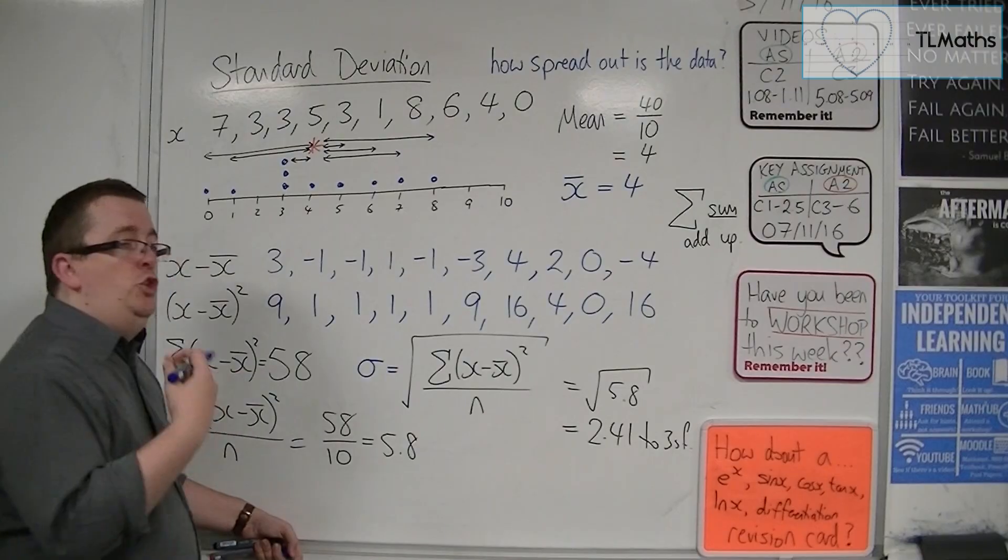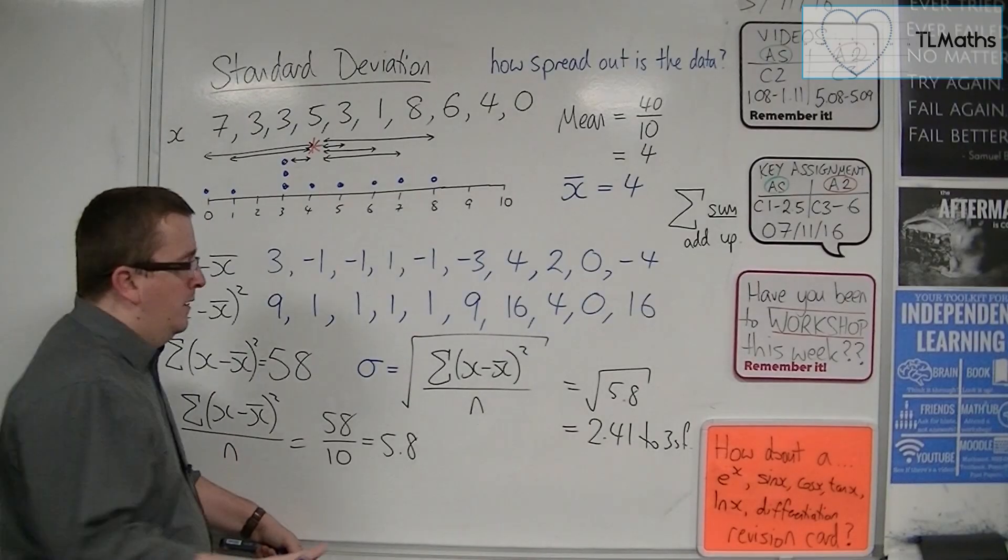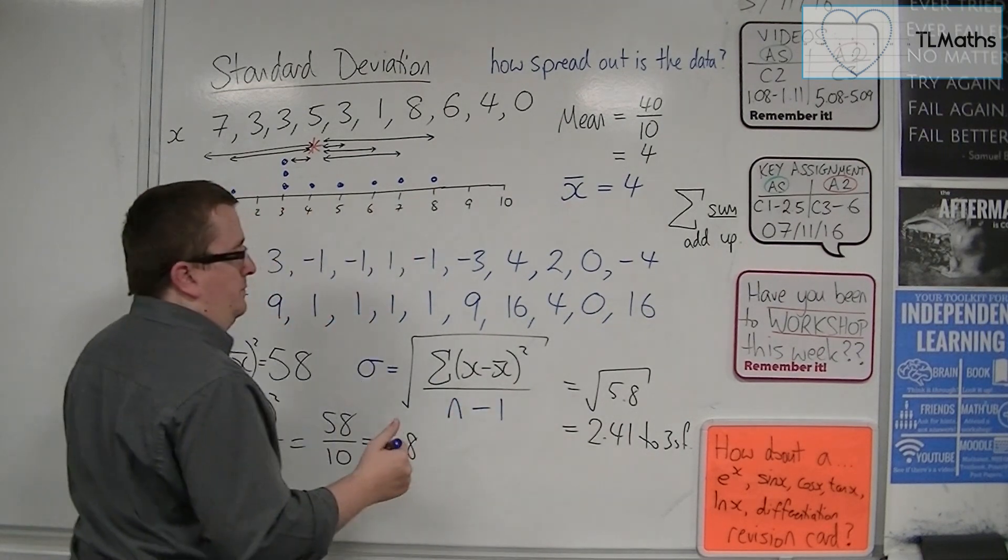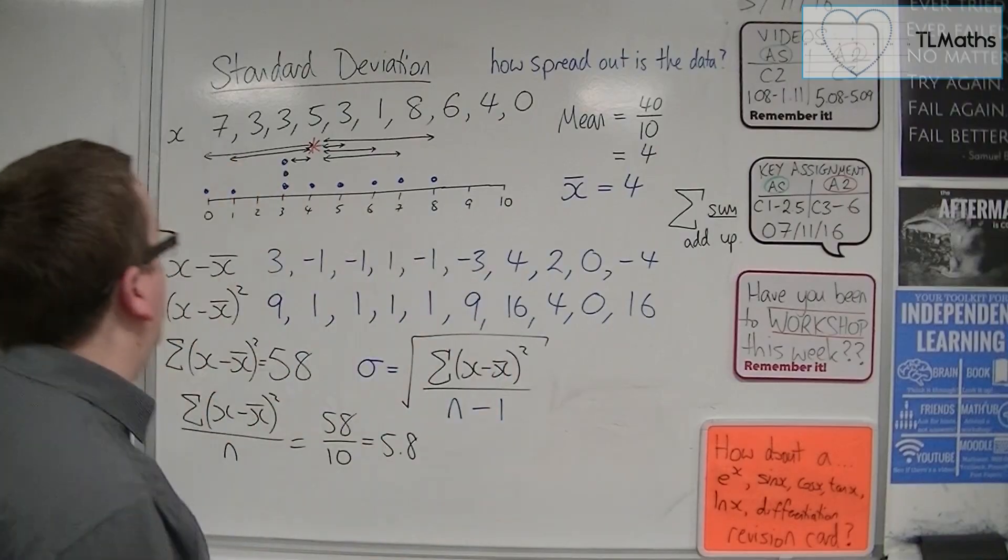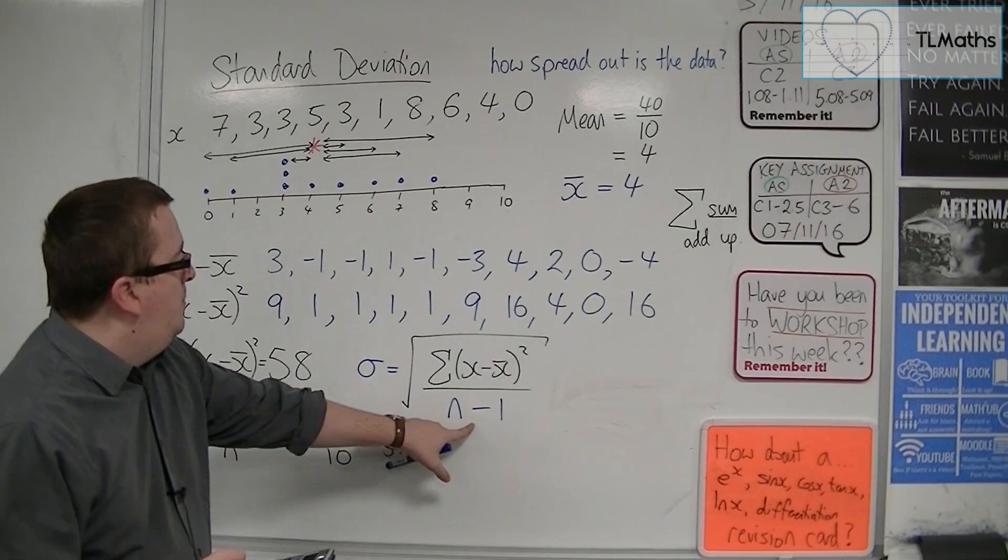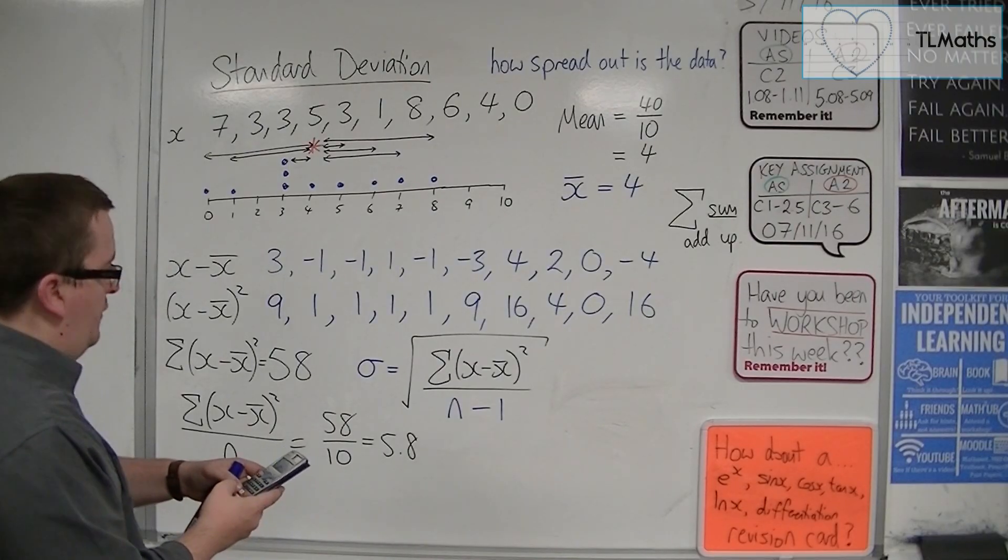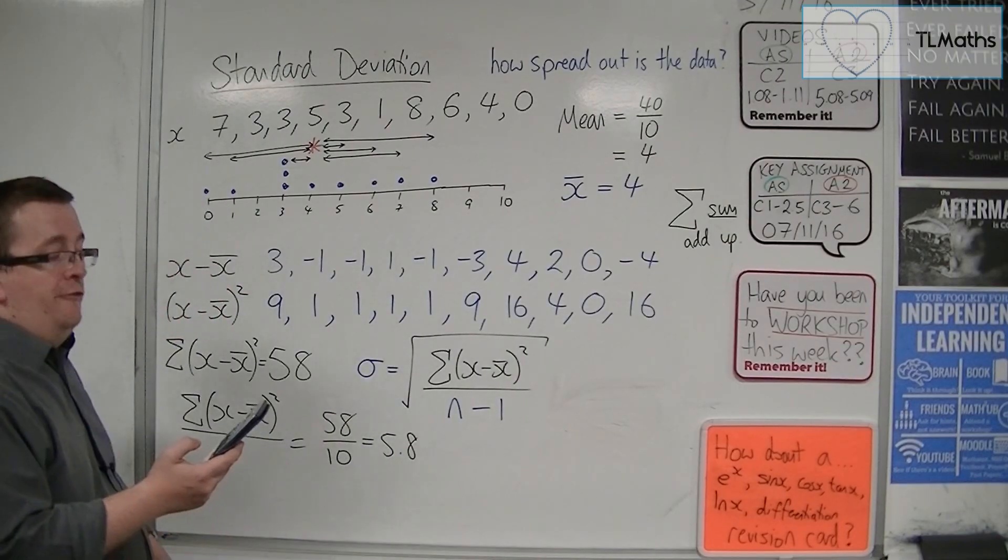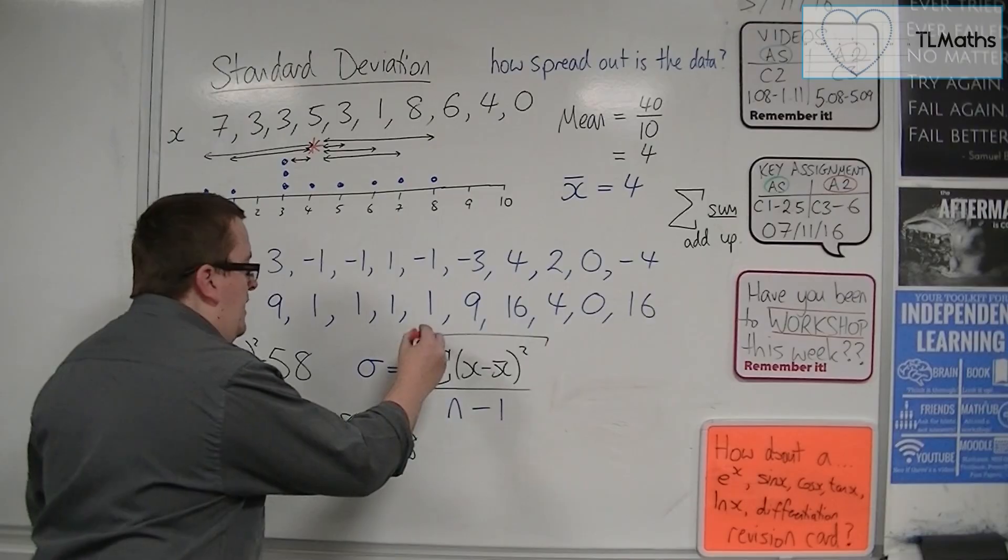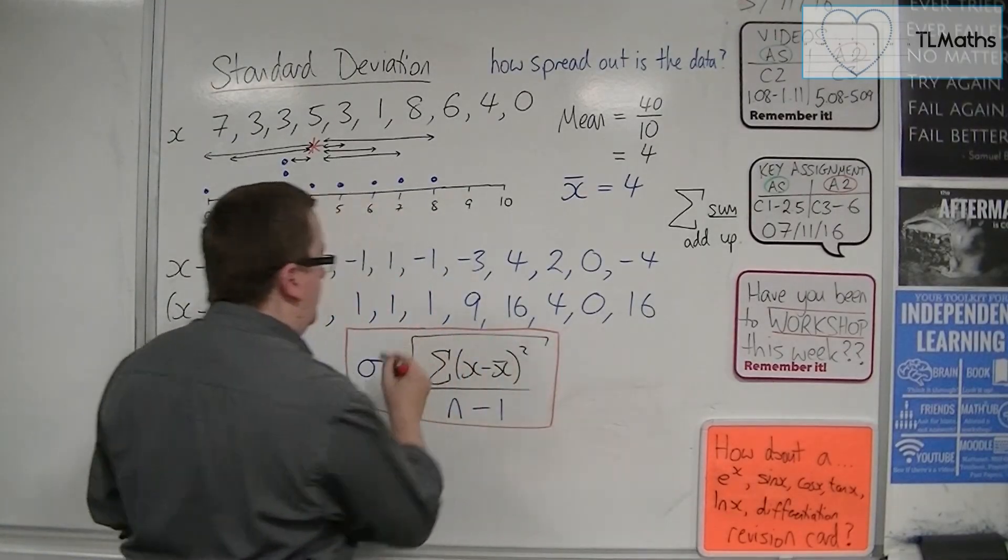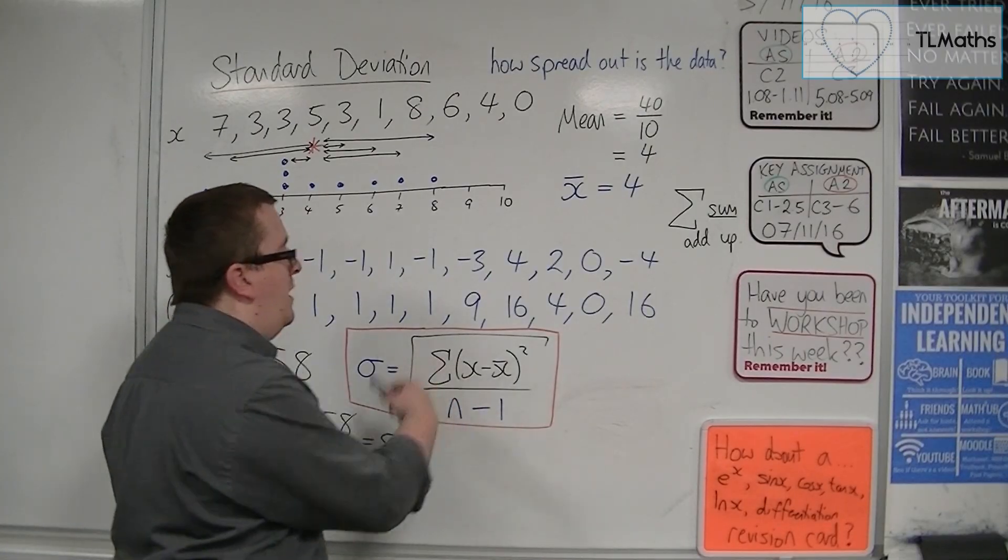So, when we are working with a standard deviation in general, when we're working with problems in context, which for all intents and purposes on this course, they will be, we actually use n minus 1. So, yes, it would change the answer that we had. Okay. The answer that we would have would actually be, well, we'd have the 58, we would divide by 9, not 10, and then square root the answer. So, square root of 58 over 9, and that gets me 2.54. Okay. It's close to what we had, but it's not quite the same. So, this is the formula we use for the standard deviation, okay, because we're going to be looking at samples of larger populations, okay, and this gives you an unbiased estimator for that.